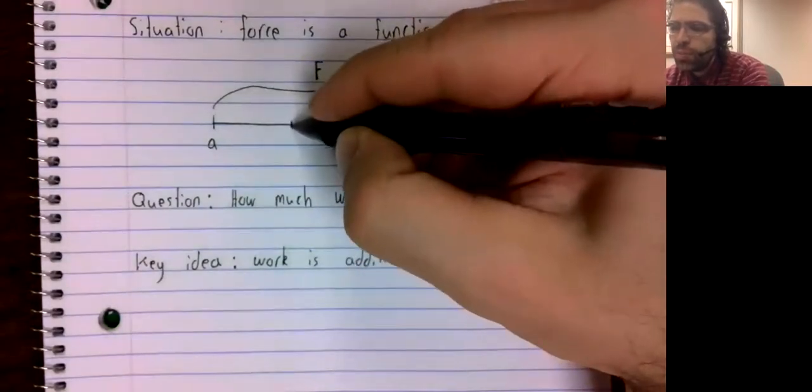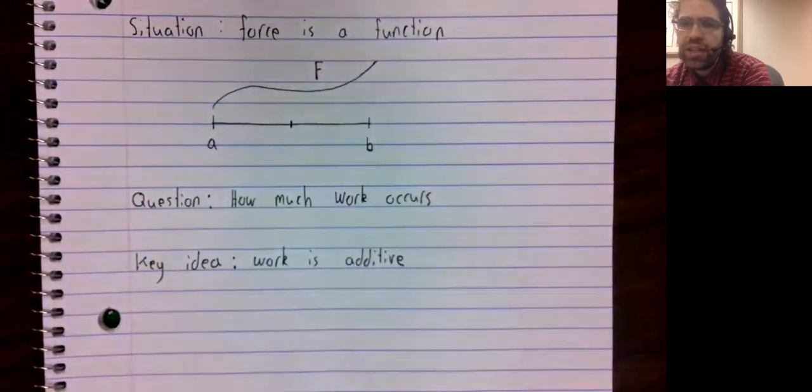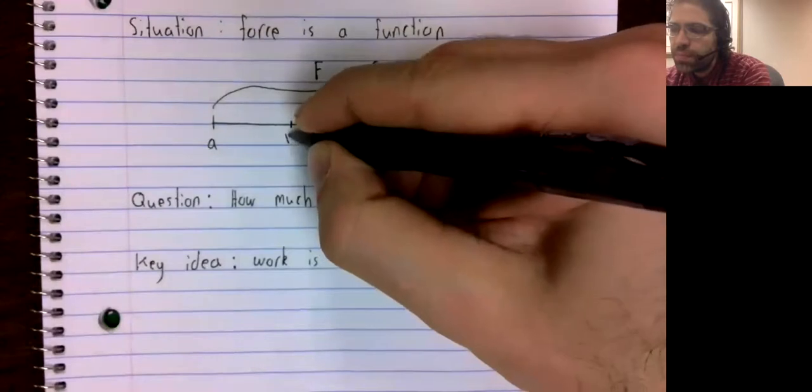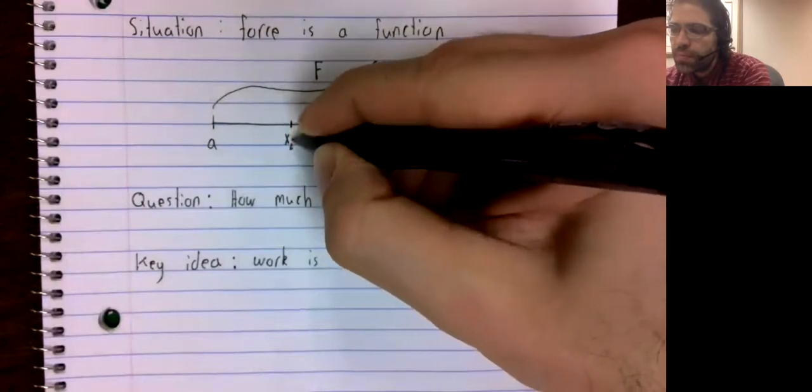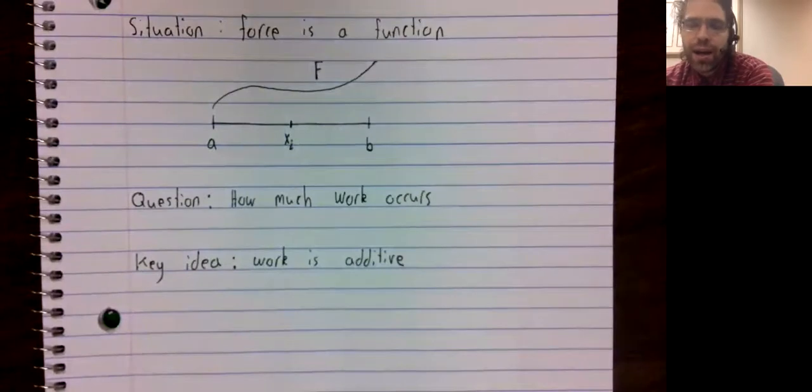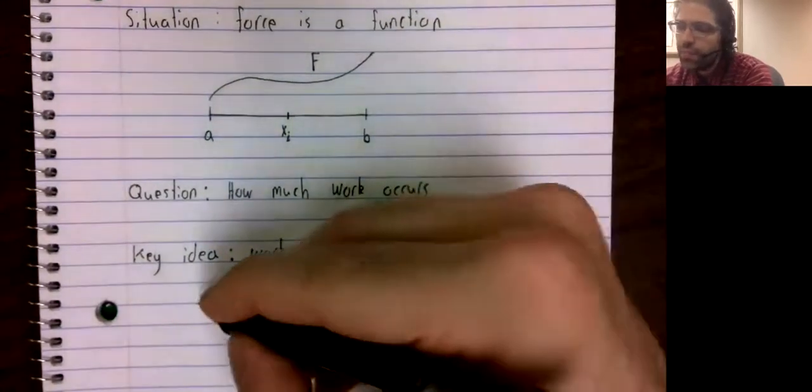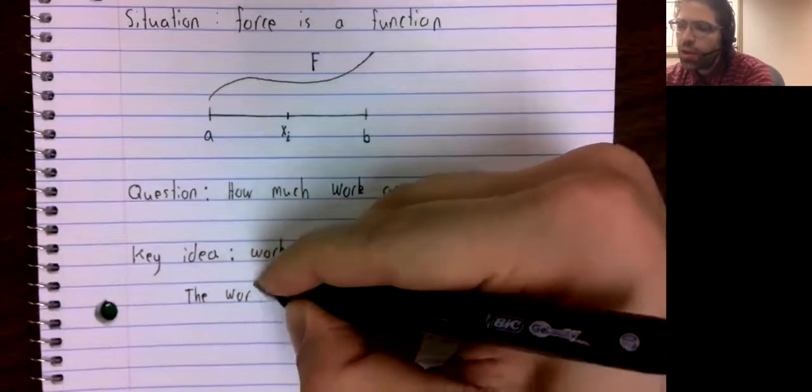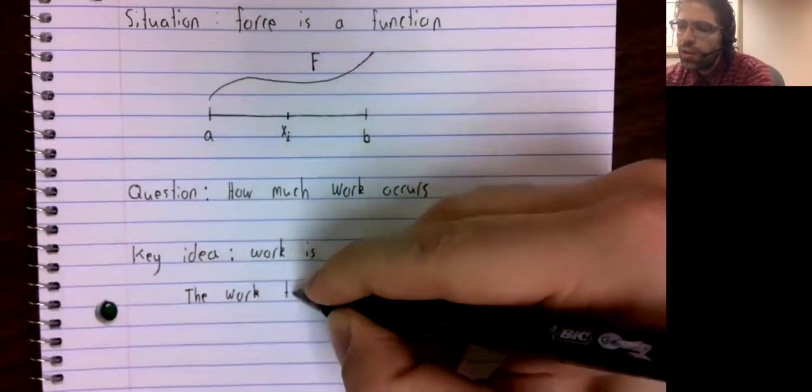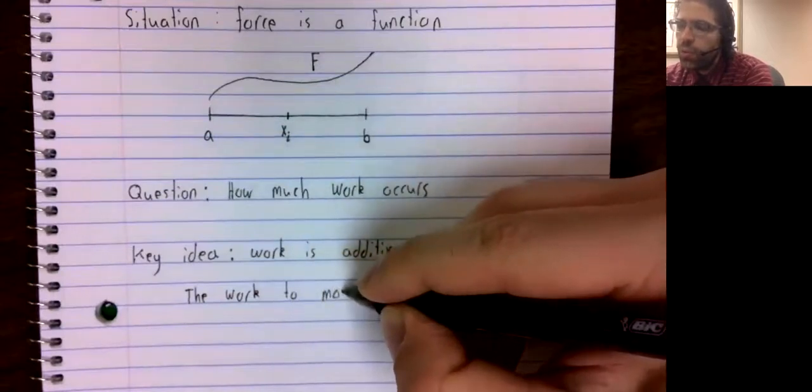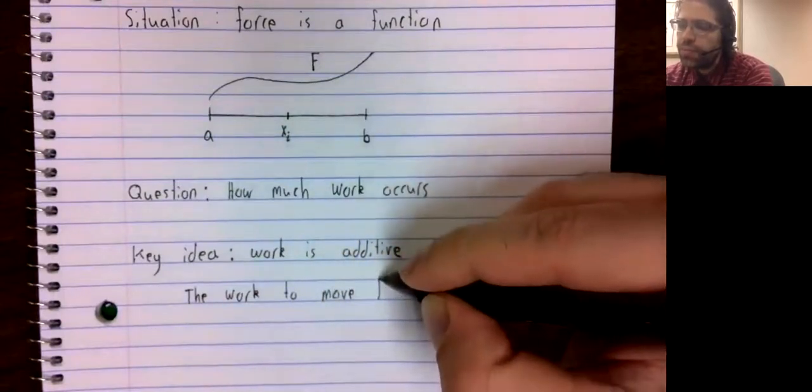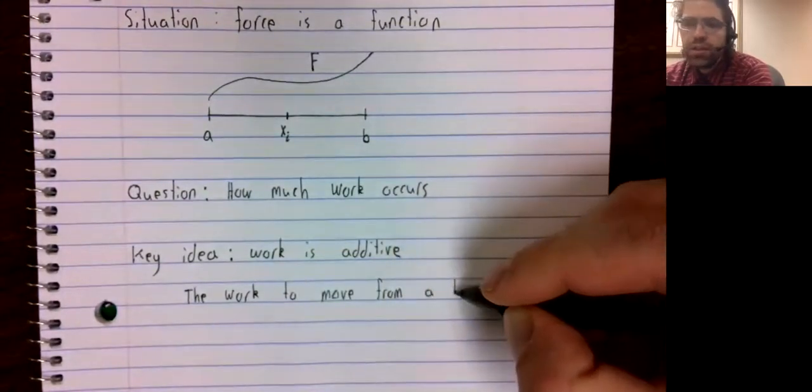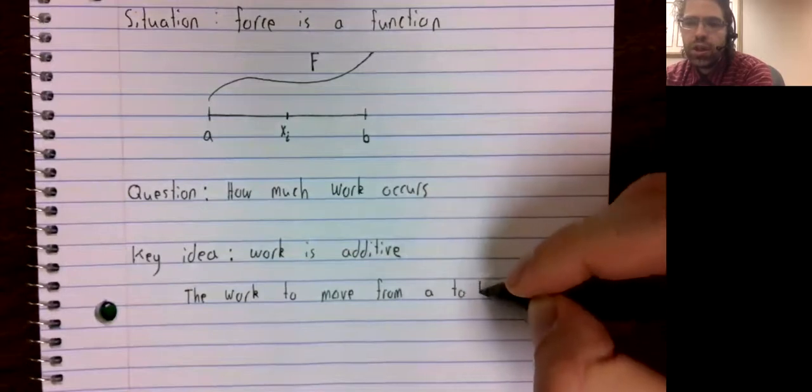So, let's say I put some midpoint here, call it x sub i. Then, the work to move from A to B